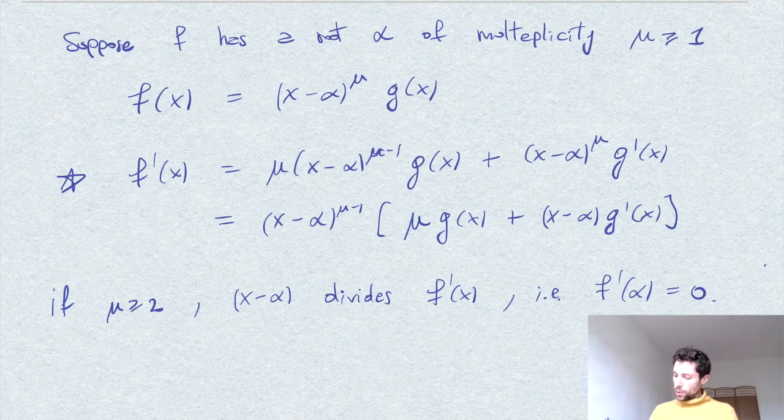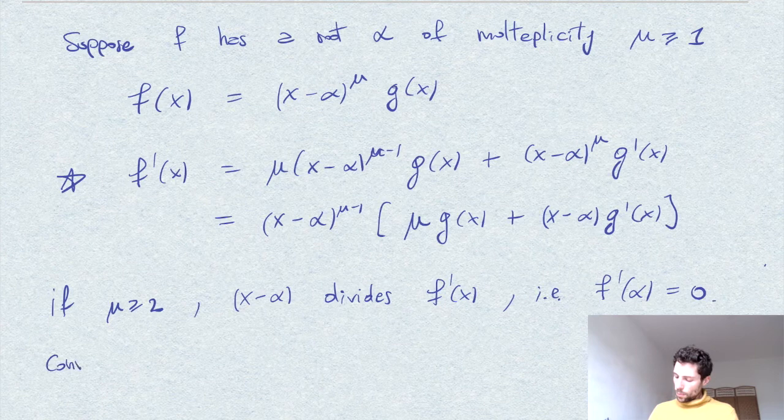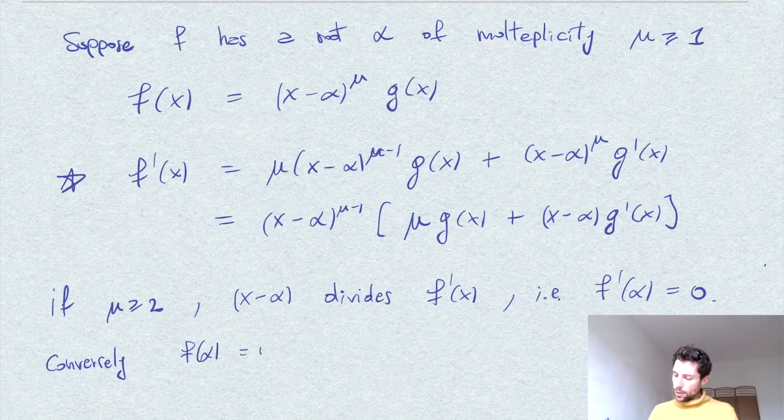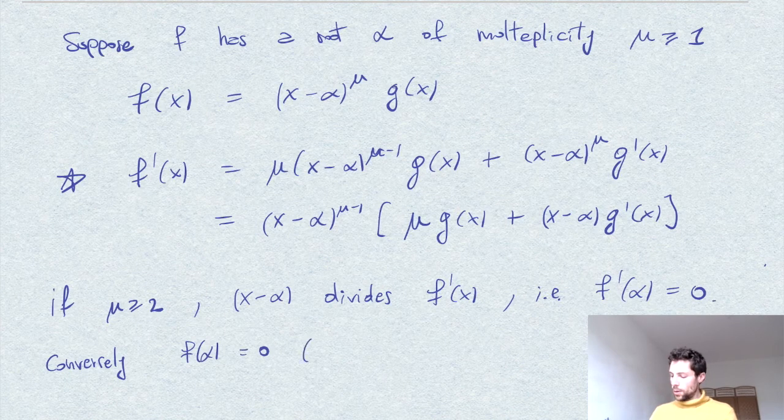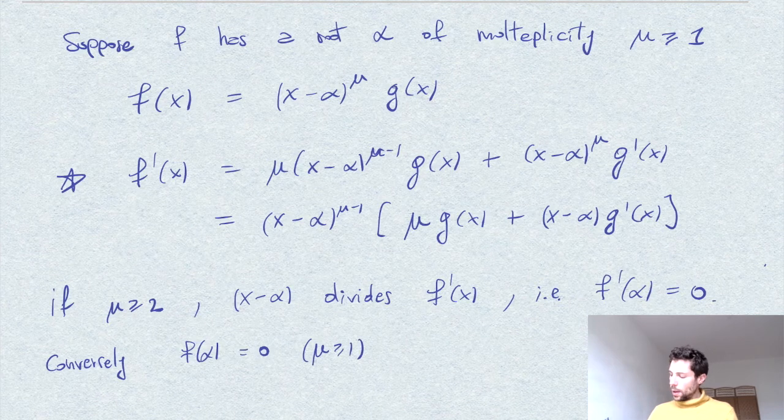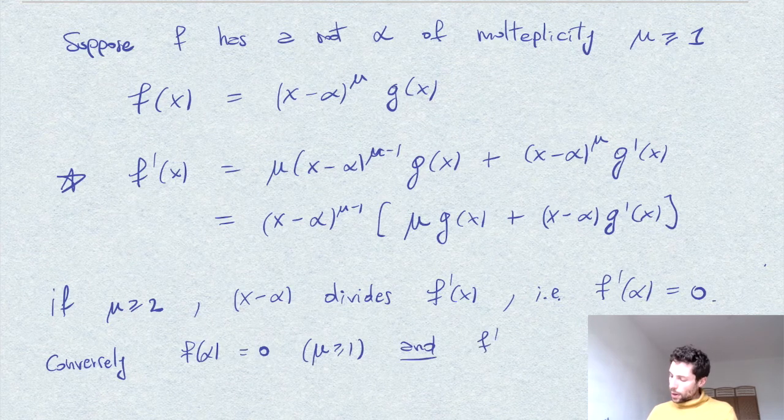Conversely, we want to suppose that f of alpha is zero, which already implies that mu is at least one. And f prime,